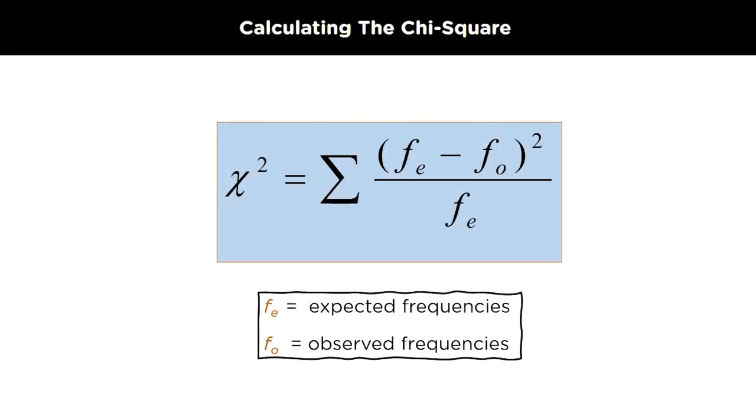To calculate the chi-square statistics, we have a direct formula. The chi-square statistic, which is also denoted by x-square, is equal to summation of expected frequencies minus observed frequencies whole square divided by expected frequencies.